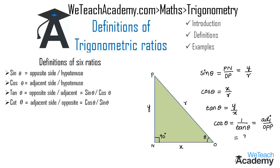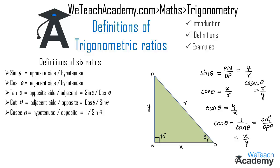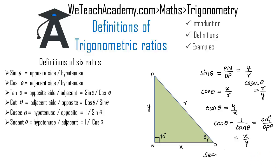The next ratio is cosecant theta, which is the reciprocal of sine theta, that is one by sine theta. So cosecant theta equals r by y. Then secant theta is the reciprocal of cos theta, or hypotenuse by adjacent side. Secant theta equals the reciprocal of x by r, which is r by x.